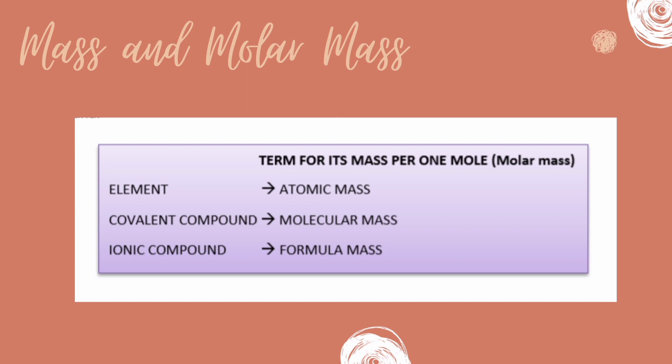Molar mass is the general term. The specific term for the mass of an element is atomic mass; for a covalent compound, it's molecular mass; and for an ionic compound, it is formula mass. Since we are referring to the mass per one mole, the unit for molar mass is grams per mole.